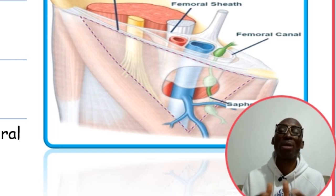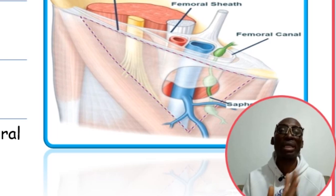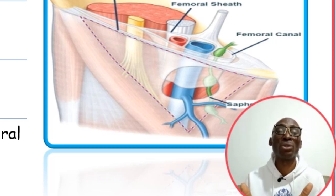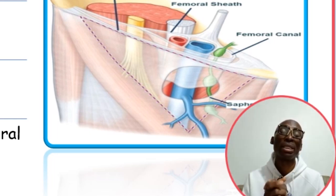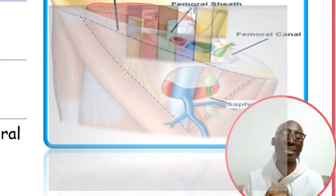By way of summary: we've seen the femoral triangle — the intermuscular depression at the upper third of the anterior thigh. It has boundaries formed by muscles: laterally the sartorius, medially the adductor longus, and superiorly the inguinal ligament. The floor has four muscles: the iliacus, psoas major, pectineus, and adductor longus — with the adductor longus forming both the floor and the medial border. If this video has been very helpful, please give us a thumbs up, press the like button, and share. Thank you, see you in my next class. God bless you.